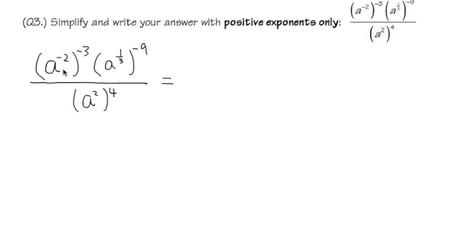So first part, as you can see, we have a to the negative 2 in the parentheses raised to the negative 3 power. This is the power to the power situation. In fact, it's the same for the rest as well. If this is the case, what we are going to do is we are going to be multiplying the exponents together.